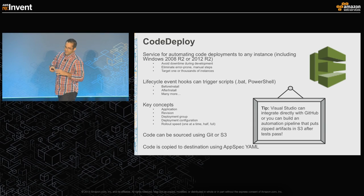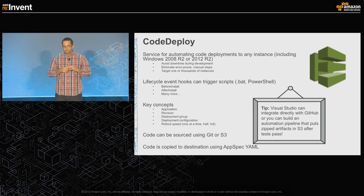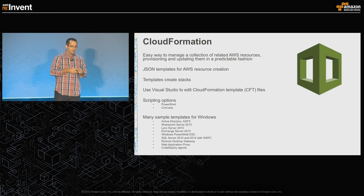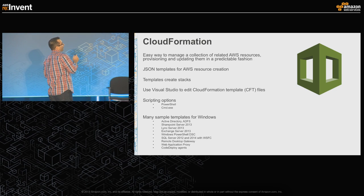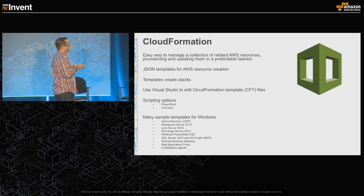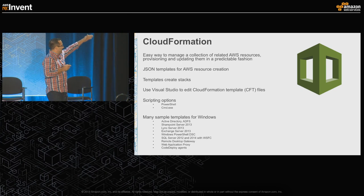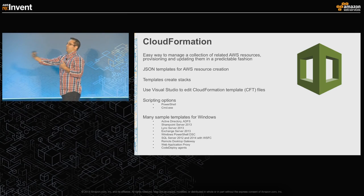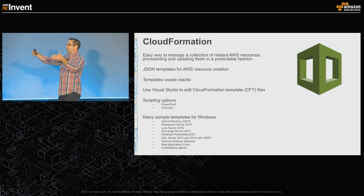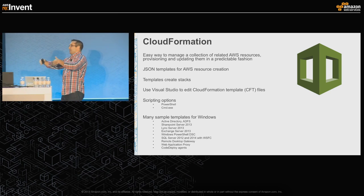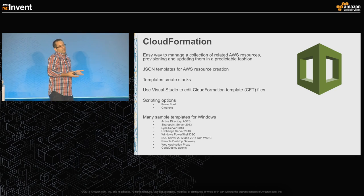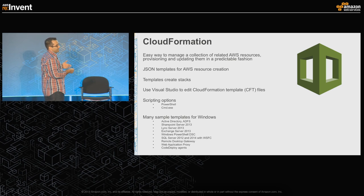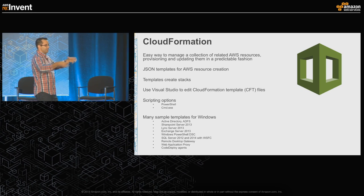We'll talk about the YAML file in the demo — that's the style in which you define what gets installed. Visual Studio can integrate directly with GitHub, or you can build an automation pipeline that puts things in S3. There are also pre-built CloudFormation templates for Windows-specific deployments — SharePoint, Active Directory, and code deployment agents. As we come up with best practices for deploying these things successfully, we produce corresponding CloudFormation templates. Customers start from one of these and tweak it for their own needs.